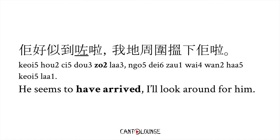So an example: 佢好似到了,我們到處找一下他吧 — he seems to have arrived, so let's look around for him. You can see 到 is to arrive, so you just add 著 afterwards to indicate that the action of arriving is completed. So that's 著 — nothing too complicated.